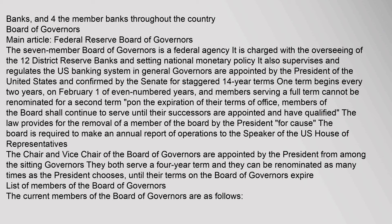The seven-member Board of Governors is a federal agency charged with overseeing the twelve district reserve banks and setting national monetary policy. It also supervises and regulates the U.S. banking system. Governors are appointed by the President of the United States and confirmed by the Senate for staggered 14-year terms. One term begins every two years, on February 1 of even-numbered years, and members serving a full term cannot be renominated. The Chair and Vice Chair of the Board of Governors are appointed by the President from among the sitting Governors and serve four-year terms.